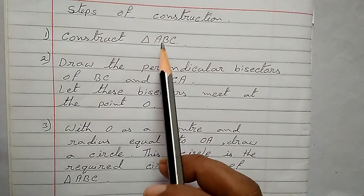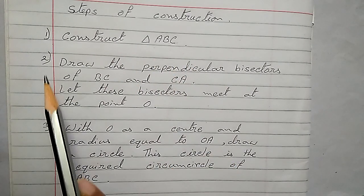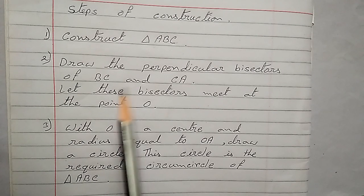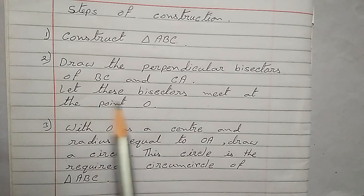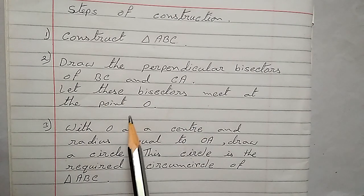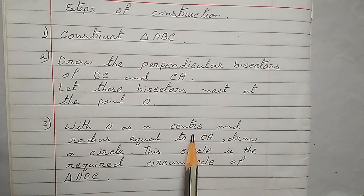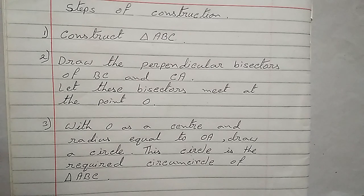Number one: construct triangle ABC. Number two: draw the perpendicular bisectors of BC and CA. Let these bisectors meet at point O. Number three: with O as center and radius equal to OA, draw a circle. This circle is the required circumcircle of triangle ABC.